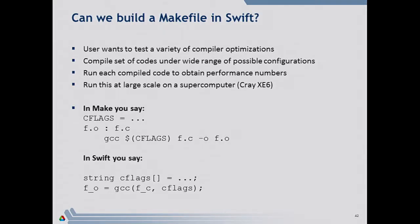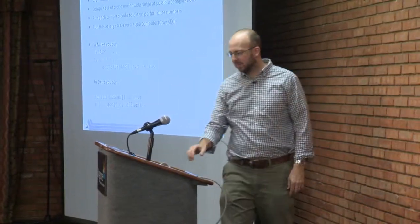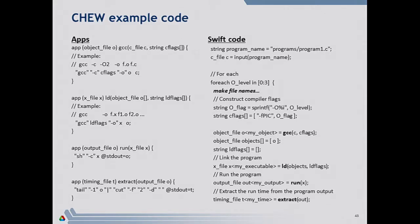Another practical example is building a makefile with Swift — essentially doing make -j 10,000 on a Cray, compiling a program 10,000 different ways. If you have your own DSL, compiler strategies, or blocking strategies you want to try, you can do that on a large cluster. Since make is a dataflow language similar to Swift, you translate your makefile step by step: instead of calling GCC in the make way, you wrap it as a Swift app — an app for GCC, an app for your link step, an app for running your program, an app for extracting performance output. Then you build a Swift for loop over all possible compiler flags, and Swift dataflow does what make -j does, running on a very large cluster over MPI.